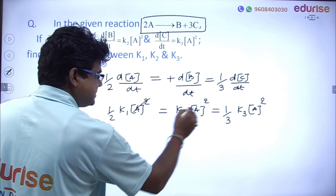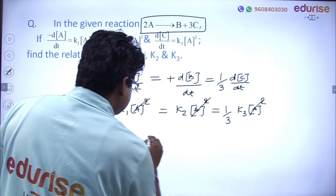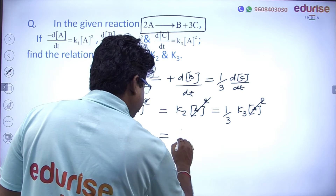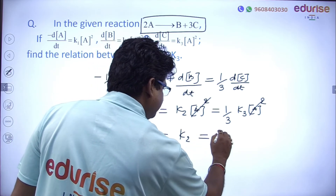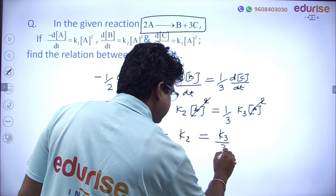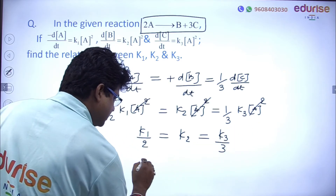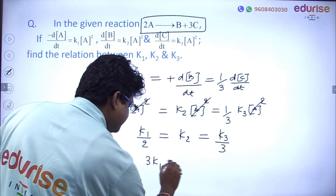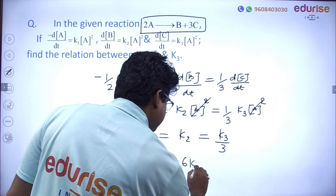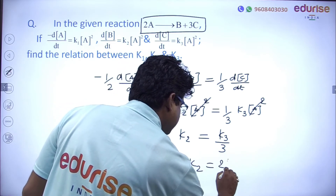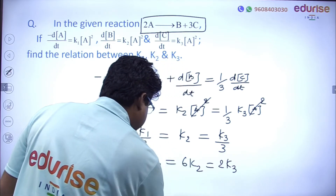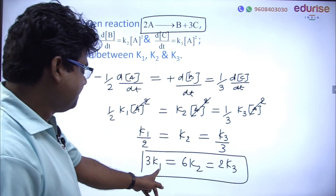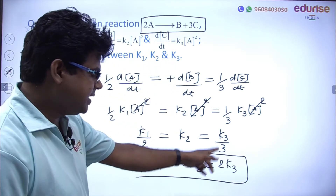Canceling [A]² from all terms and multiplying through by 6: 3K₁ = 6K₂ = 2K₃. This is the relation between K₁, K₂, and K₃. This is the right answer.